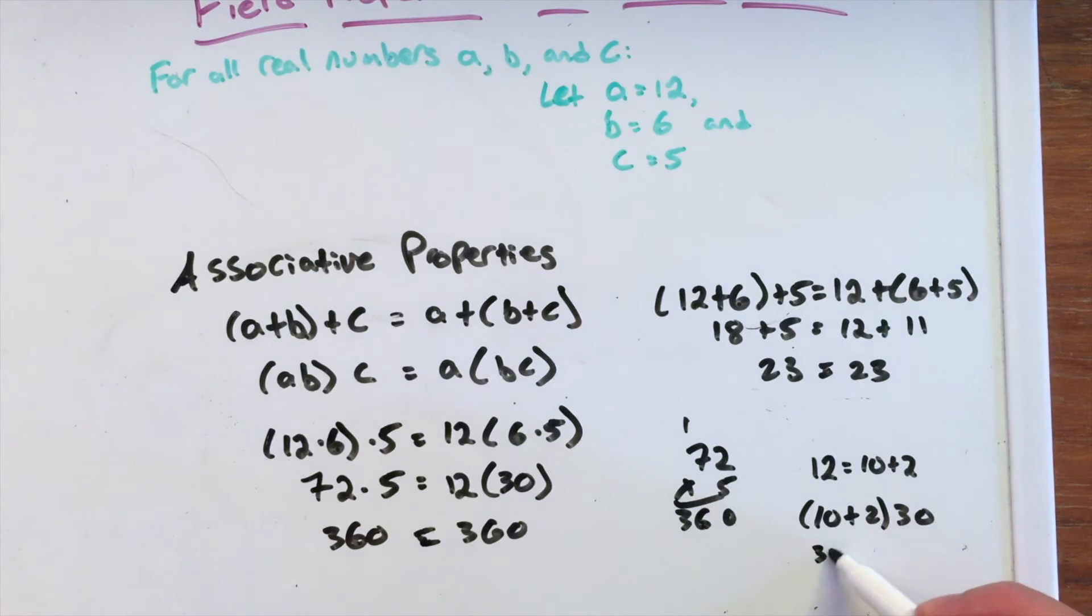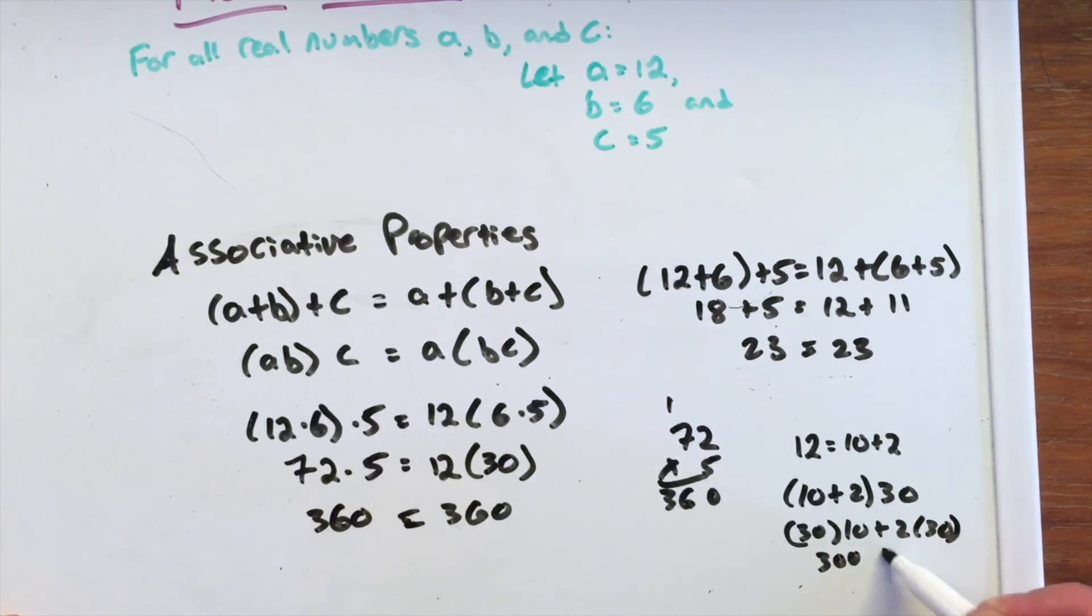We haven't talked about the distributive property yet. That's going to be coming up later. And that's 30×10 plus 2×30, which is 300+60. A little fun fact how to get that 360.